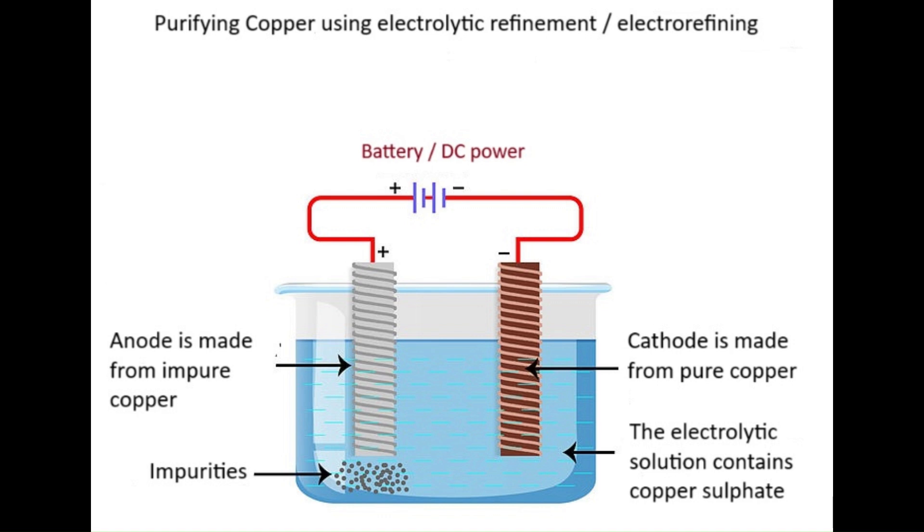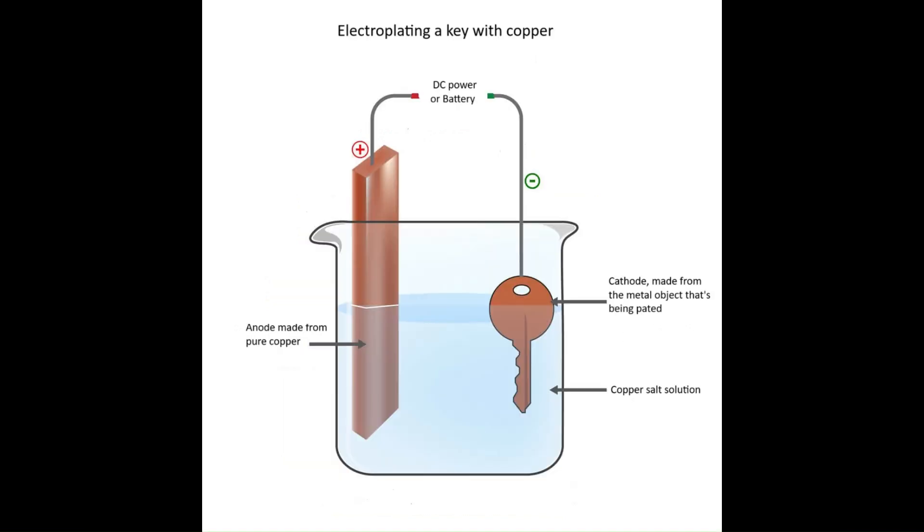Another use for this science is in electroplating. Electroplating involves coating a surface with a thin layer of metal using an electric current. In the illustration, when the electric current is applied, the copper anode dissolves, releasing copper ions into the solution.